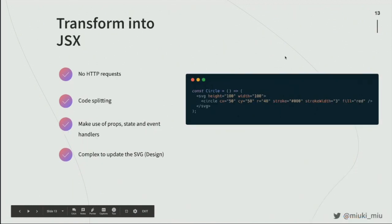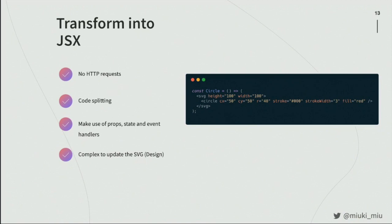The second way — and I think this is the best way if you want to create animation — is to transform the SVG into JSX. You won't have HTTP requests because the code will be inline. It's perfect if you want to split the SVG into different files, and you can make use of props, state, and event handlers. But because you start changing the SVG itself a lot, if you want to update the design it will be really difficult.